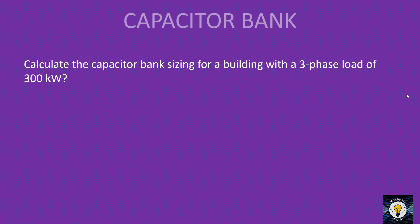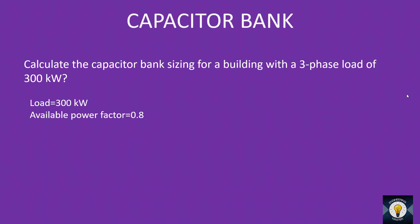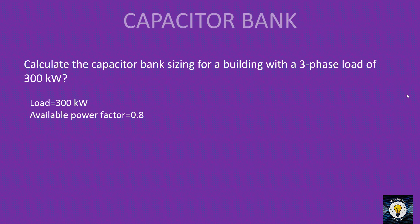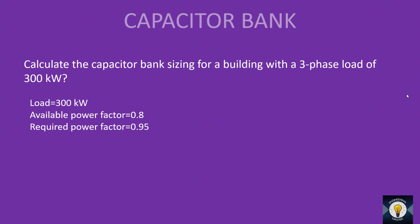Let us learn capacitor bank sizing. Calculate the capacitor bank sizing for a building with a three-phase load of 300 kilowatt. Our load is 300 kilowatt. The available power factor — if not specified, consider it as 0.8. The required power factor — anything between 0.95 to 1 is considered a good power factor, so we set the required power factor to 0.95. We are lifting the power factor from 0.8 to 0.95.